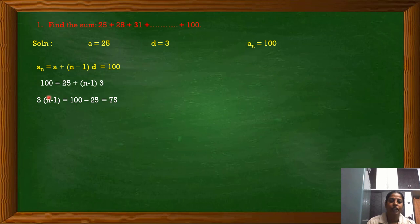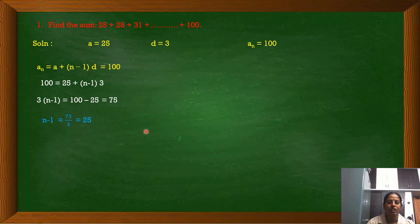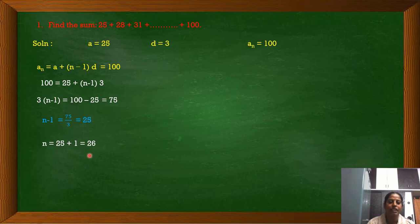Taking 25 to the other side: 100 minus 25 is 75. We are left with 3 times n minus 1 equals 75, so n minus 1 equals 75 divided by 3, which gives 25. Therefore n minus 1 equals 25, and therefore n equals 26. The number of terms in the given arithmetic series is 26.